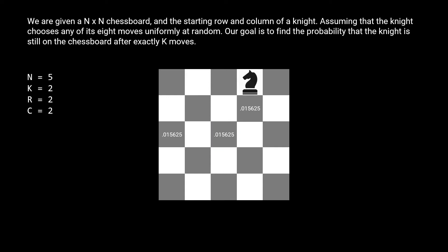That was the first of the eight positions. Let's go to this one now. For this position, of the eight moves the knight has, it can go to these three green ones and remain in bounds. Each of these spots has a 0.015 chance of the knight landing on it after two moves. However, notice for the center position, since there was already a 0.015 chance of landing on it, the center piece now has two times that for 0.03125. If we were to repeat this process for the other six squares from the first iteration, these would be our final probabilities.